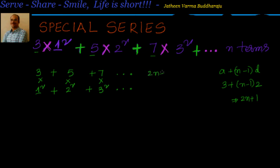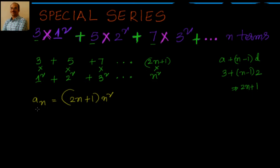For 1² + 2² + 3², the nth term is simply n². So I multiply the two to get my aₙ: aₙ = (2n+1)·n². The whole effort is in finding the general term — once you know that, everything else is easy. Expanding: aₙ = 2n³ + n².